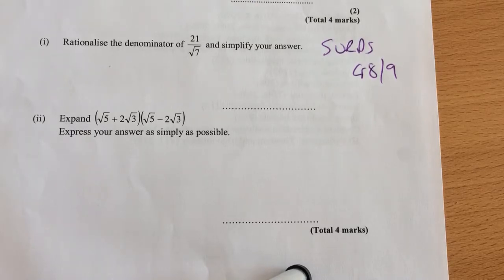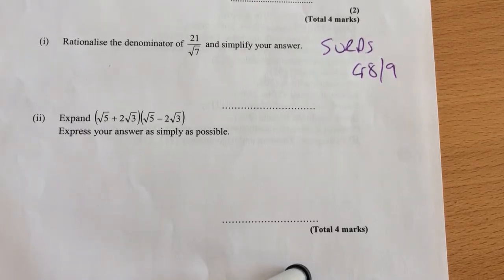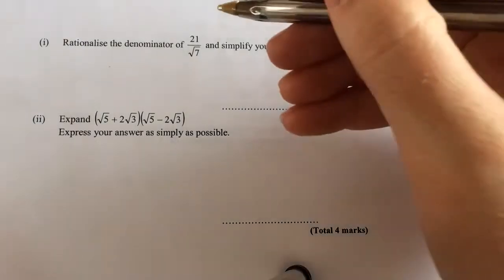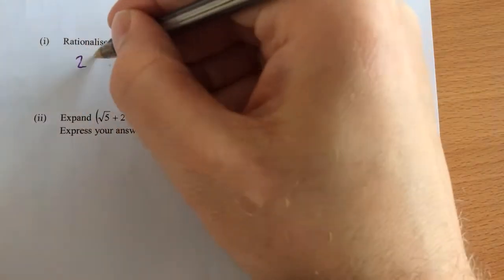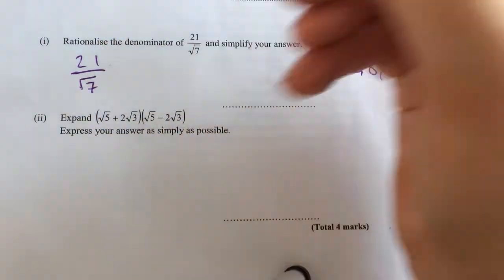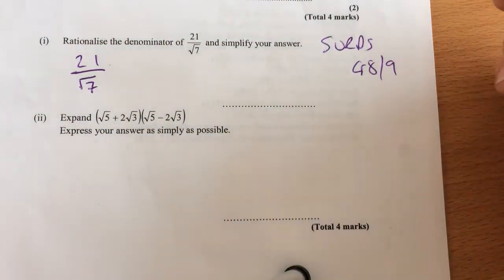Hello and welcome to Martin Maths. We're continuing our grade 8 and 9 series, looking at more surds. First we have to rationalize the denominator, 21 over root 7. My guest presenter is going to help me. What do I do?